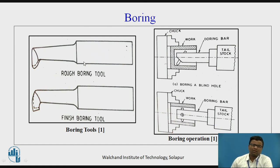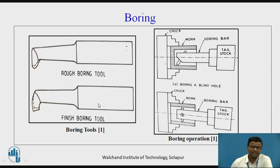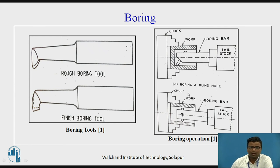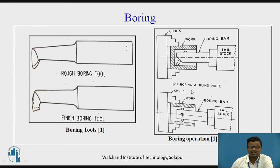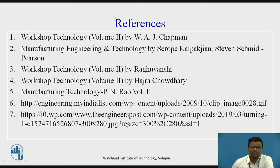The next operation is boring. There is a rough boring tool and a finished boring tool. In the rough boring operation, a heavy stock of material is removed; in the finished boring operation, very little material is removed but the surface finish is higher. There is also a cylindrical boring bar used in boring. There are two types of boring: boring a blind hole and boring a through hole. Boring is performed after drilling — if you already have a hole from casting or forging and want to enlarge it, you use the boring operation.